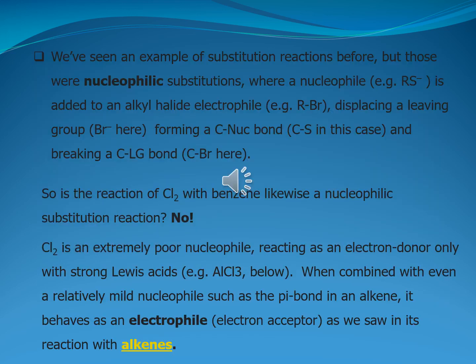We have seen substitution reactions before in our previous semester, but those were nucleophilic substitution reactions, where a nucleophile such as alkyl sulfite is added to an alkyl halide, that is the electrophile, in the form of alkyl bromide, displacing a leaving group — bromide as an anion — and forming a carbon-nucleophile bond, that is a carbon-sulfide bond, while breaking a carbon-leaving group bond, that is the carbon-bromide bond.